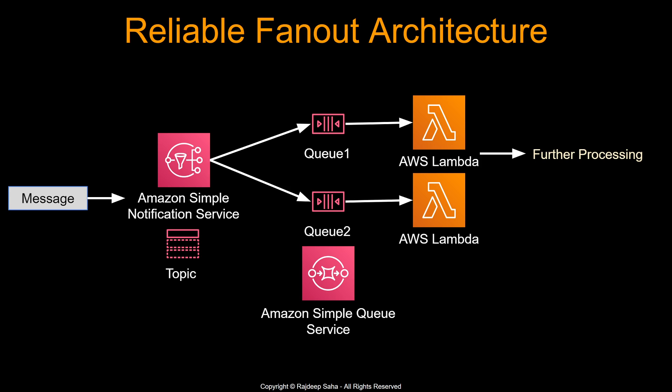The last design is a combination of SNS and SQS, used quite extensively in real-world scenarios. When you want to fan out your messages and also make message delivery reliable, you publish your message to an SNS topic, then depending on message filtering, send it to different SQS queues, and trigger different Lambdas to process those messages. Alright guys and girls, that is the video — if you like it, please click the like button and subscribe. I will see you in the next video. Bye!